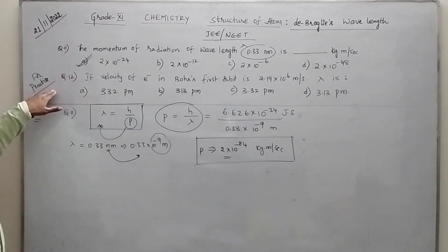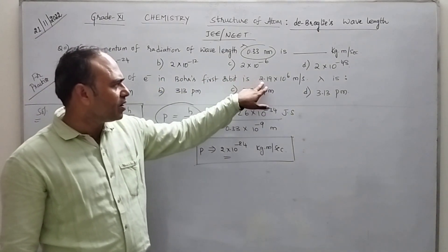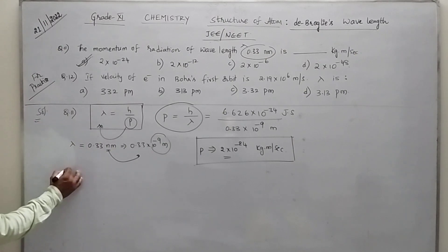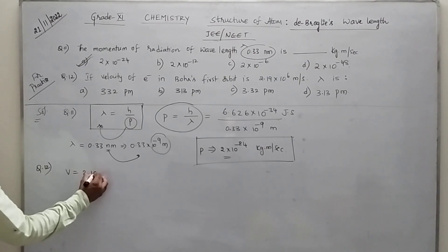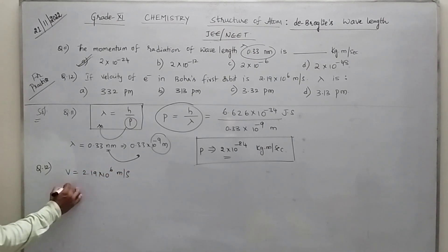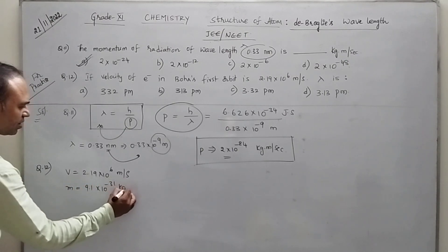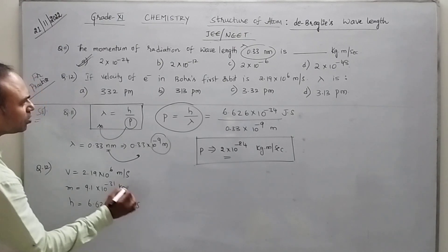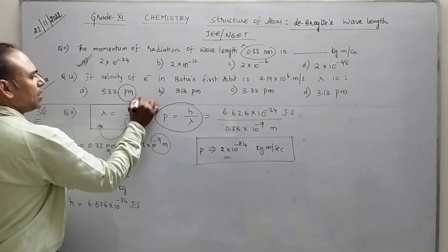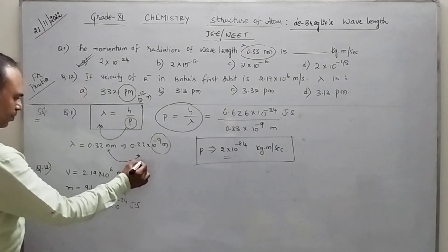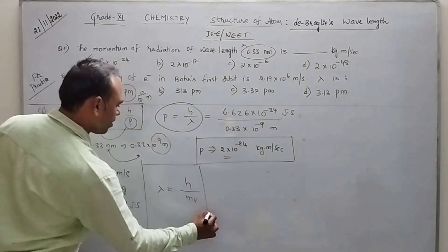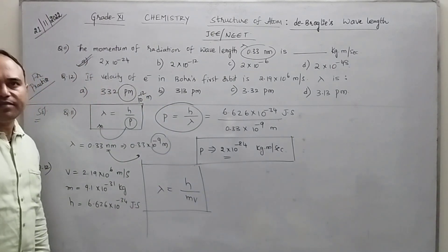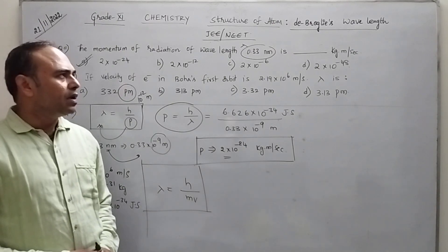Now let me give you one question for practice. Velocity of electron is given as 2.19 into 10 to the power of 6 meter per second, and you need to calculate the wavelength. Mass of electron is 9.1 into 10 to the power of minus 31 kg, and Planck's constant is 6.626 into 10 to the power of minus 34 joule into second. The answer is given in picometer — that is 10 to the power of minus 12 meters. Applying lambda is equal to H by MV, we can calculate the value. So using de Broglie's wavelength, we have solved 12 numericals. In the next class, we will be discussing Heisenberg's uncertainty principle. Thank you so much.